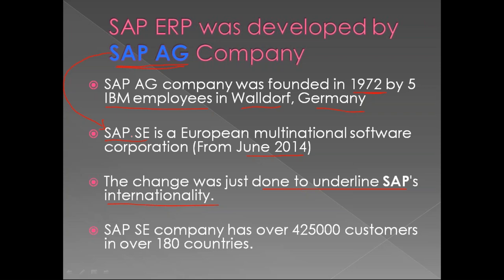SAP SE company has over 425,000 customers - meaning over 425,000 companies are using SAP products - across over 180 countries. So almost all major companies in the world are using SAP ERP software.